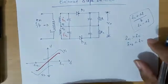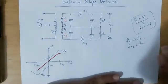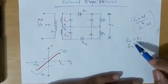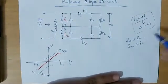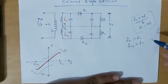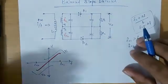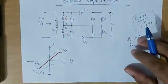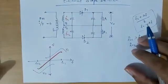The upper winding is tuned in such a way that its resonant frequency F01 will be greater than the carrier frequency Fc. The lower winding is tuned in such a way that its resonant frequency F02 will be less than the carrier frequency Fc.